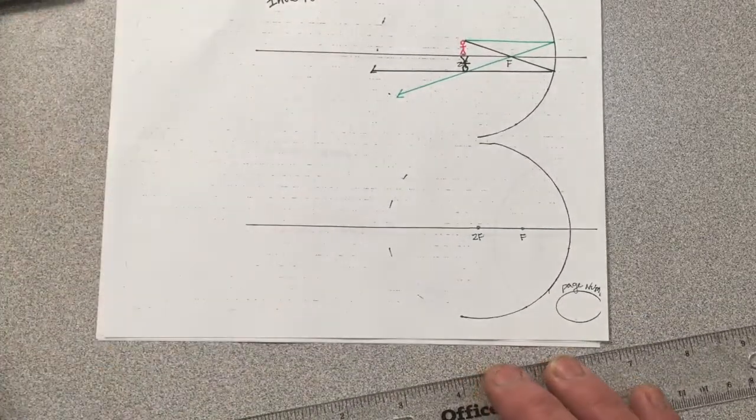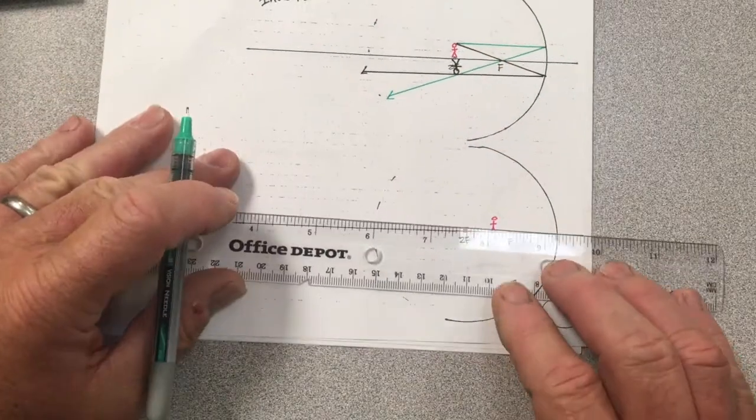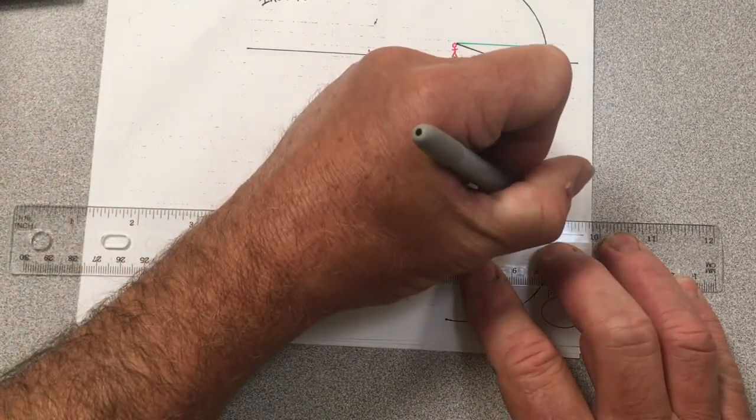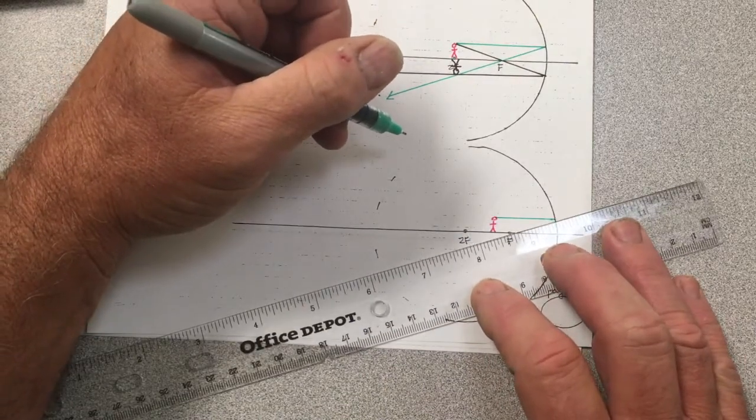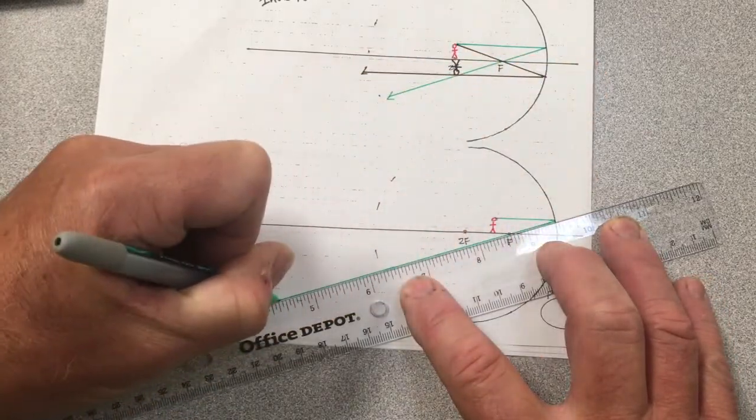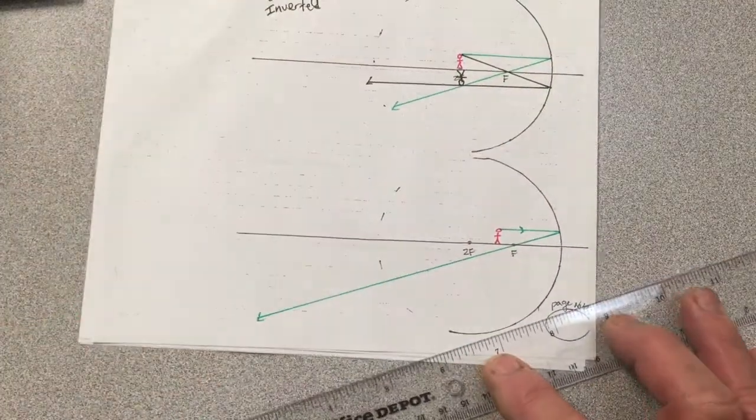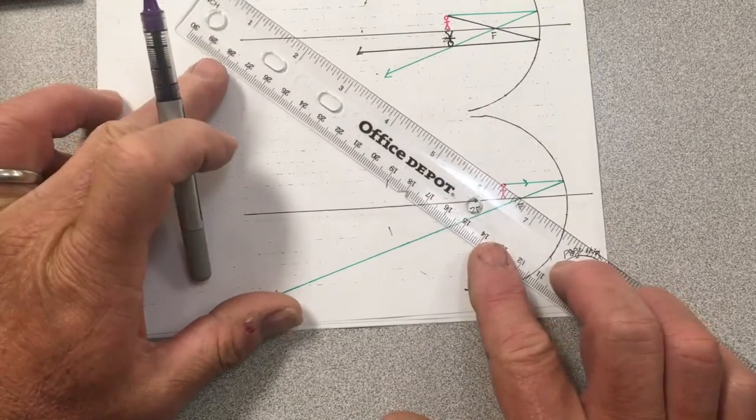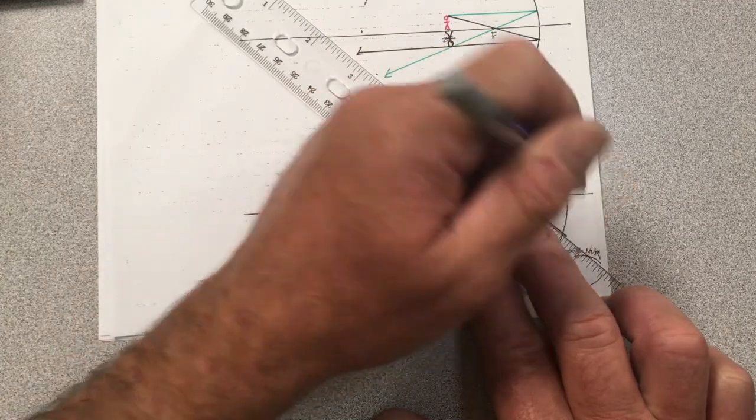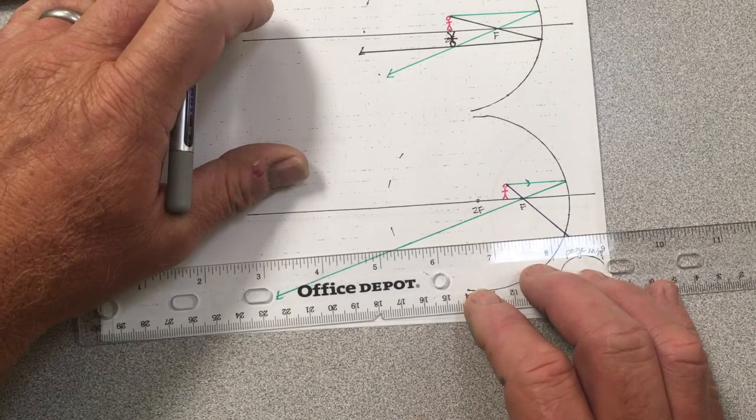At this point we'll probably go pretty quickly. Let's jump to the case where the object is between F and 2F. Again, ray 1 leaves the object traveling parallel to the principal axis. After reflection it travels through F. Experience tells me to continue this ray pretty far because this is the situation where the image is larger.